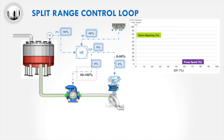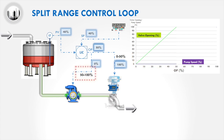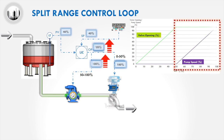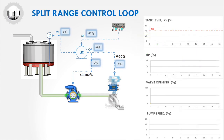To understand how split range control works, let us assume the controller output increases to 50%. At a controller output value of 50%, the valve opening is at 100%. However, the pump speed will remain at 0%. The pump speed does not increase because the split range control will only increase the pump speed when the controller output is above 50%. When the controller output is above 50%, the pump speed slowly increases to 100%.